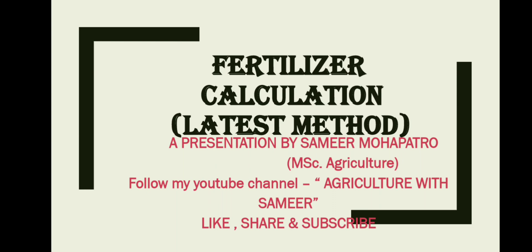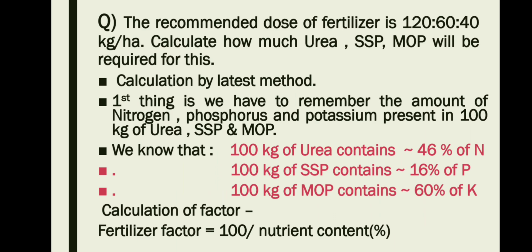Let us check this question: the recommended dose of fertilizer is 120-60-40 kg per hectare. How much urea, SSP, and MOP will be required for this area? So this is the question. The first thing is calculation by the latest method.